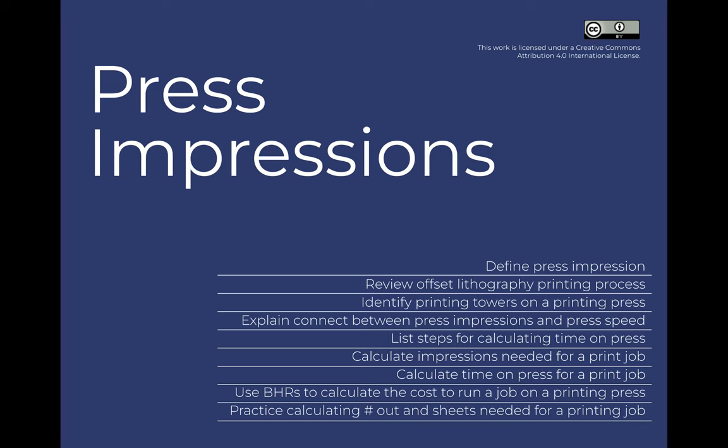Once we understand what a press impression is, we can use that to make a connection between what a press impression is and how fast a printing press runs, which then allows us to calculate the total time for a job on press. Once we know how much time it will take to run a job on press, we can calculate the cost for that time.